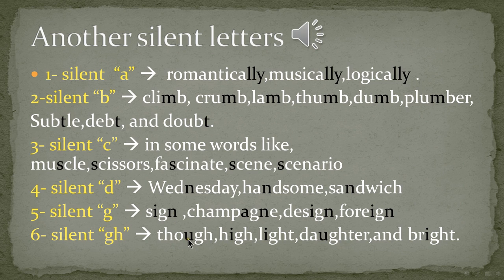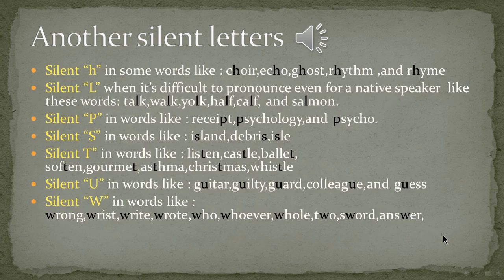Silent G: words like sign, champagne, design, foreign. Silent GH: words like though, high, light, daughter.